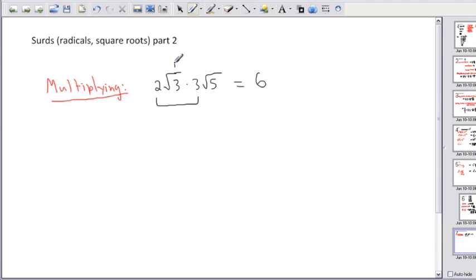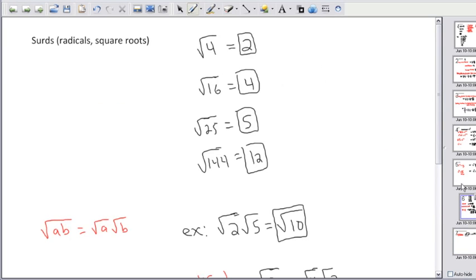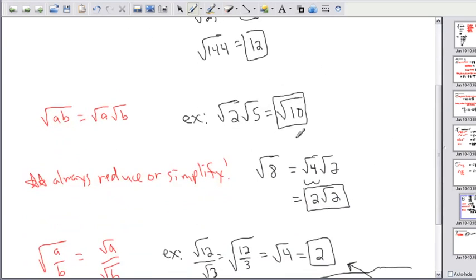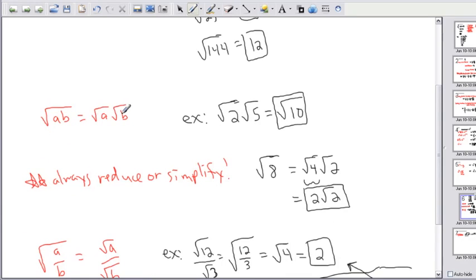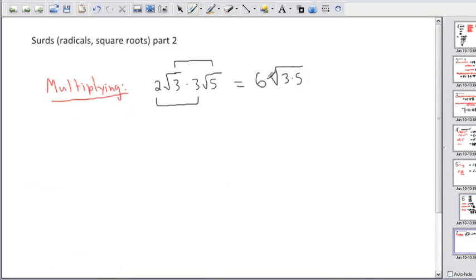And then I'll work on these square roots. So square root of 3 times square root of 5 gives me square root of 3 times 5. Remember, I'm using what we just did in the last video here, that the square root of 2 different things is the square root of the 2 things multiplied.